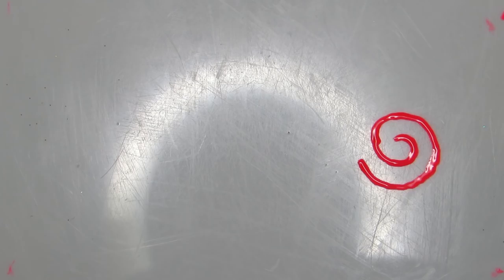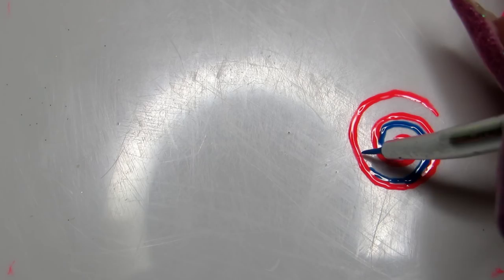With a brush, just draw a spiral nice and thin with one of your colors. Leave enough space for two more colors in between.